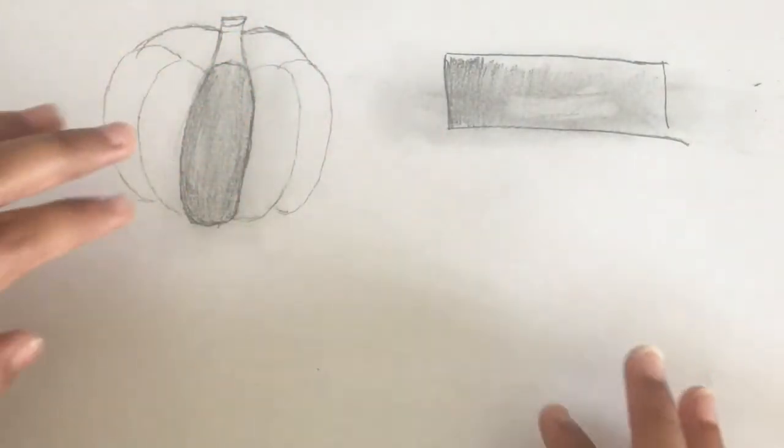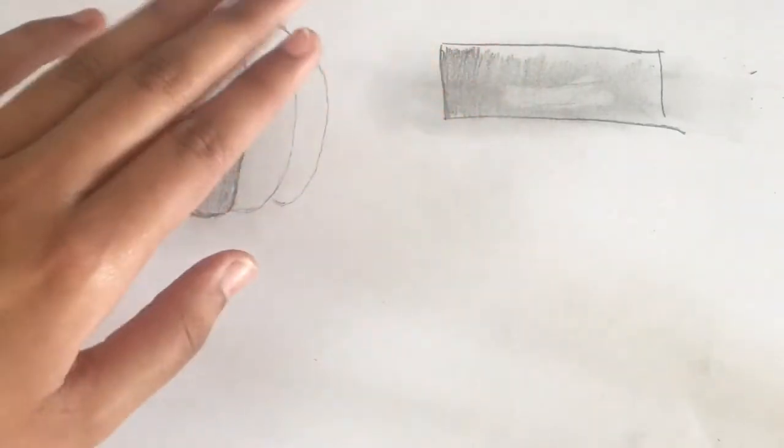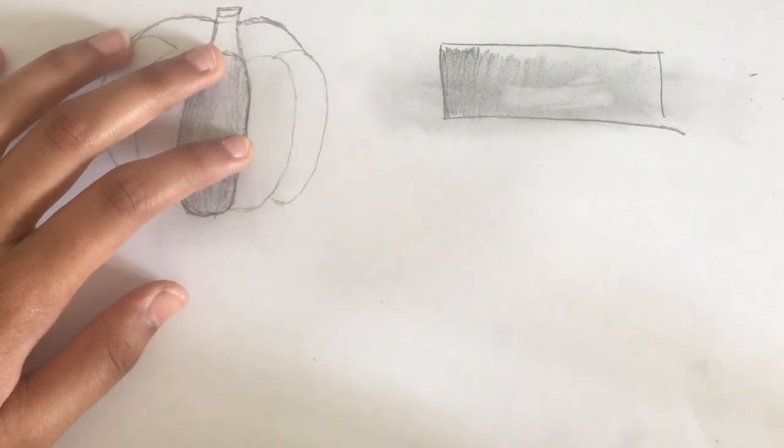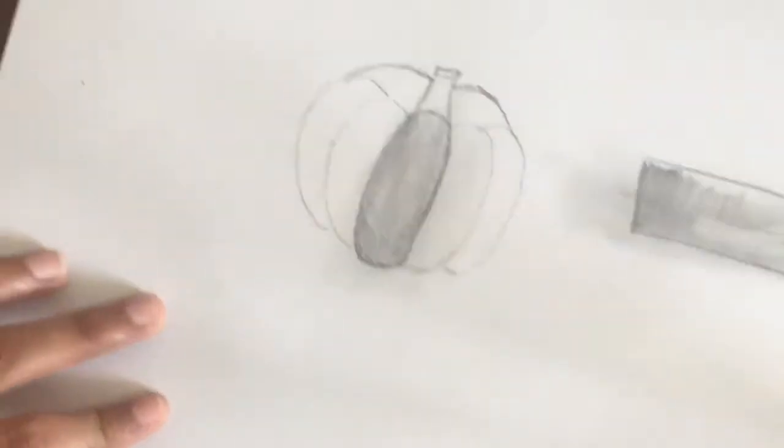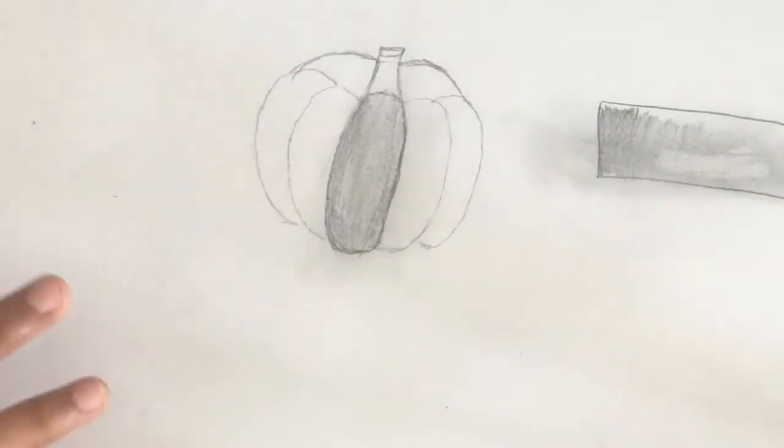If this were to be an apple, that would be where the light would be shining on the apple. That's kind of what those white things you see are. It's usually how the light is shining on the apple, but this isn't an apple.